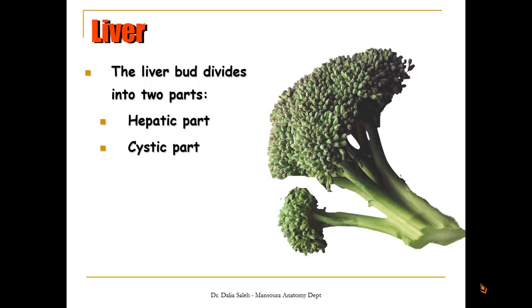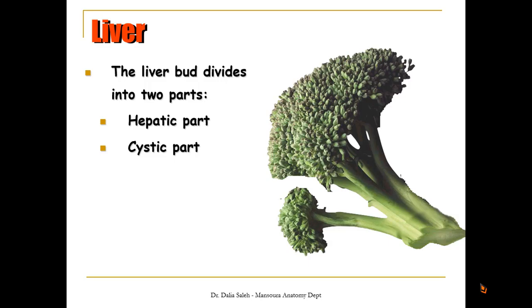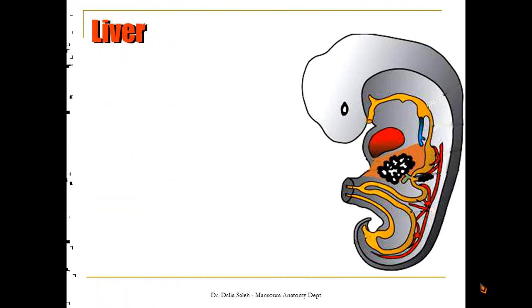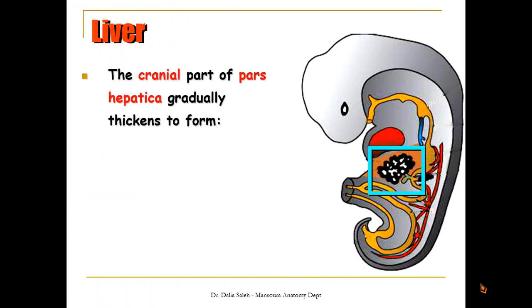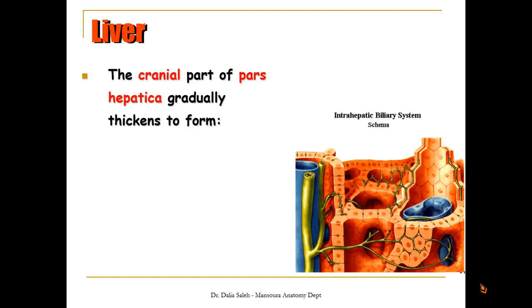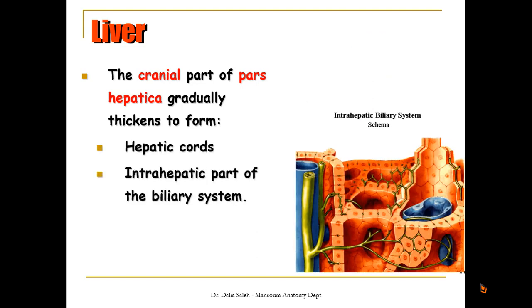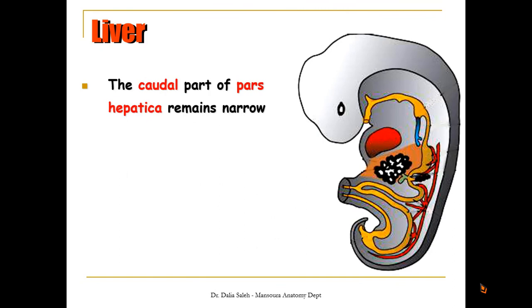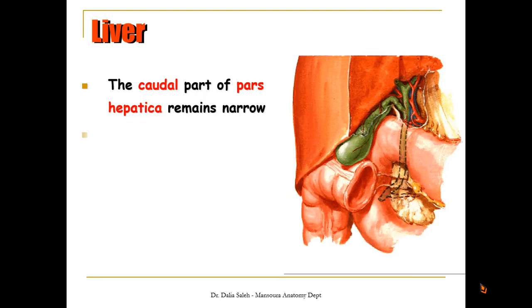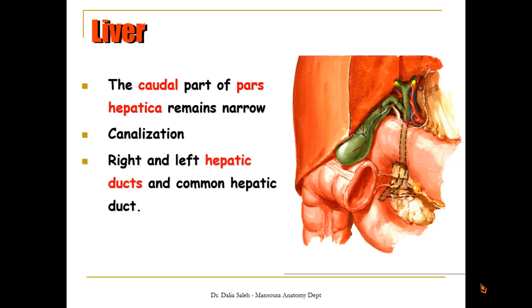The stem of the hepatic part will form the hepatic duct; together they will form the common bile duct. The cranial or pars hepatica part gradually thickens to form the hepatic cords and the intra-hepatic part of the biliary system. Remember these structures are endodermal in origin. The caudal part remains narrow, becomes canalized, and will form the right and left hepatic ducts and the common hepatic duct.